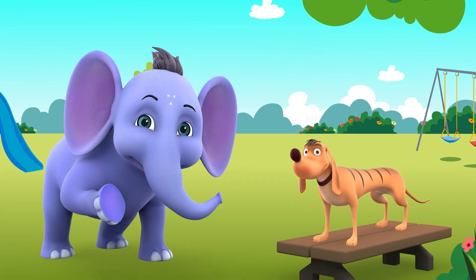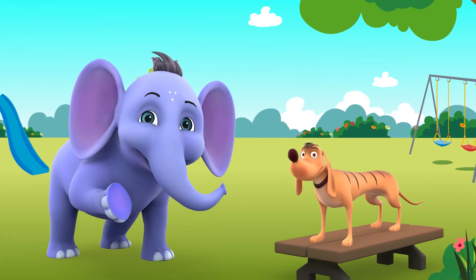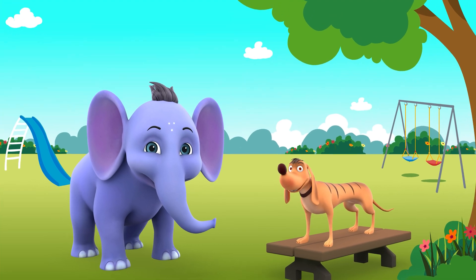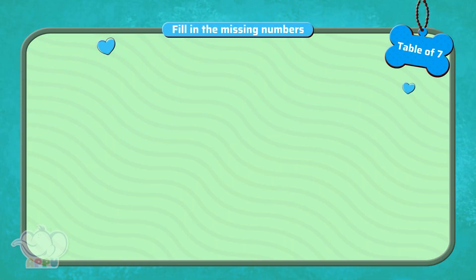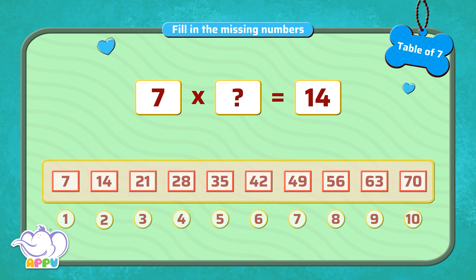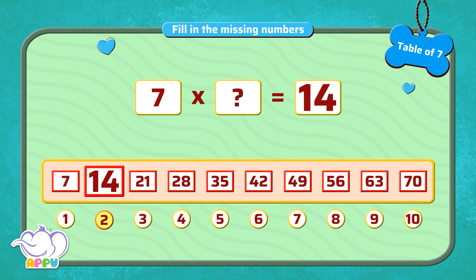Let's see if you can fill in the missing number in the number sentence. I'm ready. Fill in the missing numbers. 7 multiplied by a number is 14. What is the missing number? The missing number is 2, because we have to skip count by 7 twice to get 14.